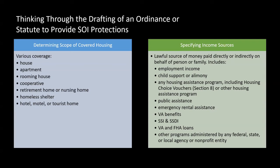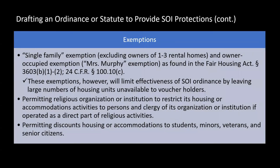The ordinance should include public assistance, emergency rental assistance, specify FHA and VA loans, include SSI and SSDI income, and any other programs administered by any federal, state, local agency, or nonprofit — just so there's no confusion. It should be all-inclusive when it comes to source of income.